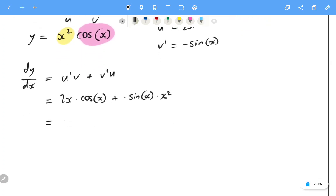Alrighty, combining this a little bit neater, we're going to get 2x cos of x minus x squared sin of x, and there's our derivative. Let's have a look at another.